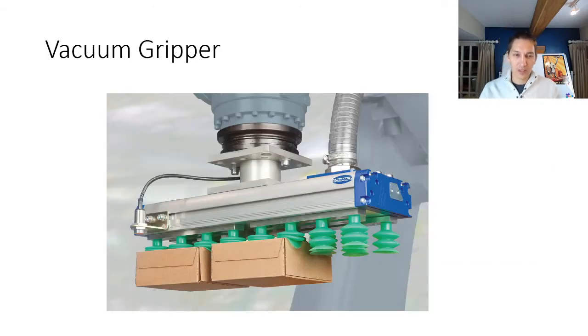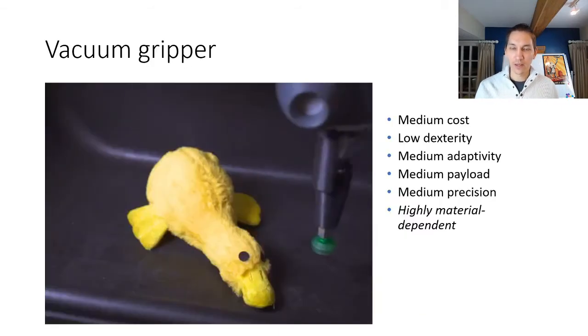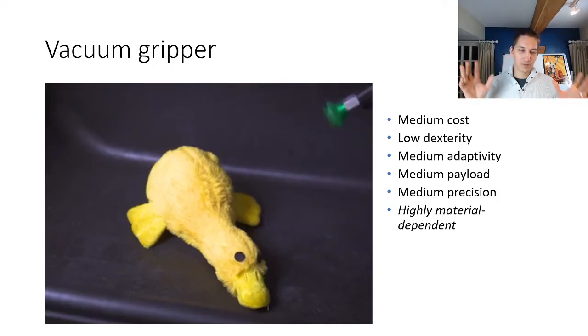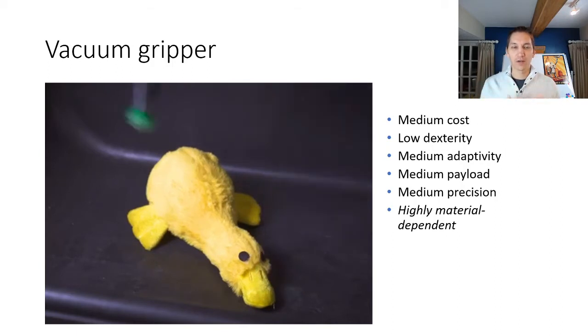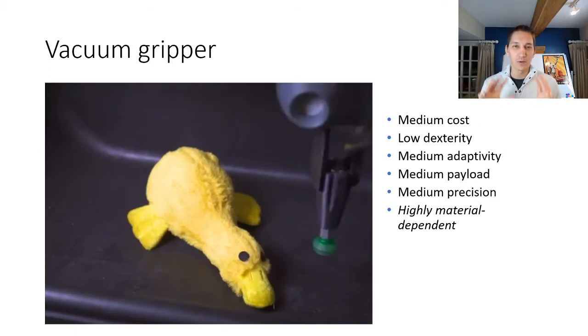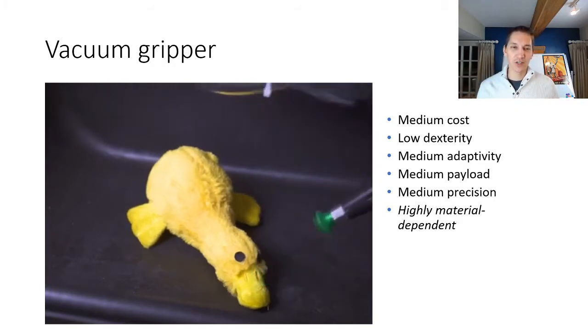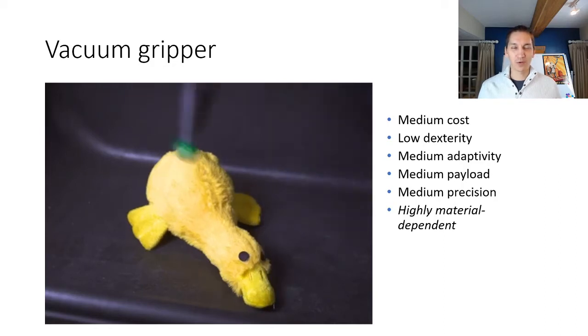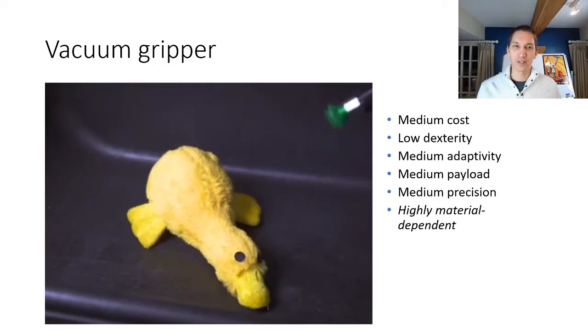On the opposite end of dexterity we have vacuum grippers. These are actually used a lot in industry because they're really easy to use, they have pretty good payloads, and they're not that expensive. They can grab a ton of things just by moving to them, turning on your vacuum, and then pulling out. The problem is that sometimes they're material dependent and so you can't pick up porous things, but otherwise they work fantastically. We've used them in our Amazon Robotics Challenge and they work super well, and it's a lot easier to do planning for these kinds of vacuum grippers.